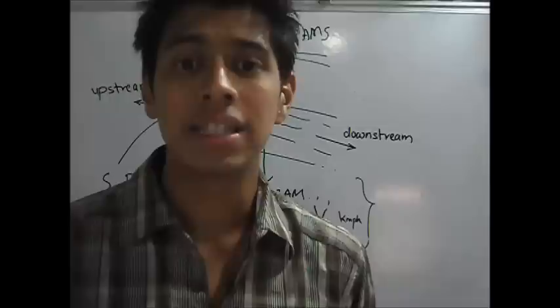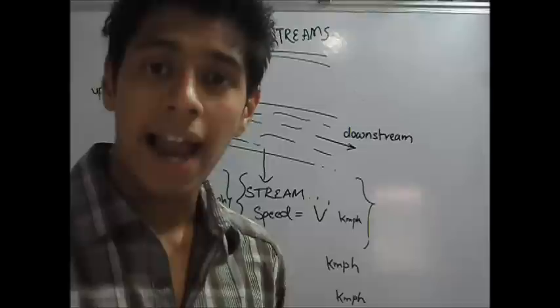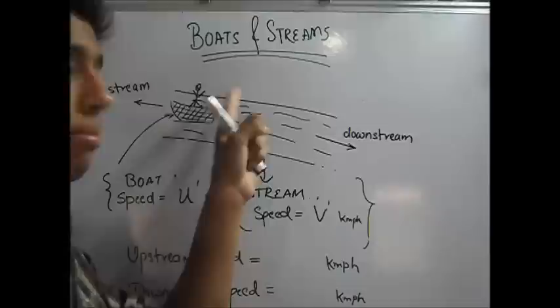To understand Boats and Streams, the first thing you need to do is understand what is Boat Speed and what is Stream Speed. Boat Speed is the speed of your boat in still waters. Let us assume that you have a boat speed of u kilometers per hour. Stream Speed is the speed of the water that it adds or subtracts from your speed.